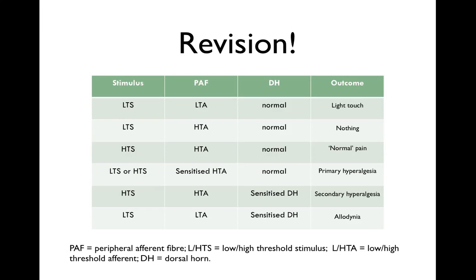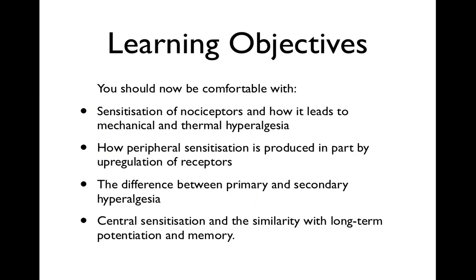So you should now be comfortable with sensitization of nociceptors, the difference between heat and mechanical hyperalgesia and allodynia, how peripheral sensitization is produced by upregulation of receptors, the difference between primary hyperalgesia — involving primary afferent fibers — versus secondary hyperalgesia involving the dorsal horn, and the different types of central sensitization. Thanks very much, and we'll see you in the next lecture.